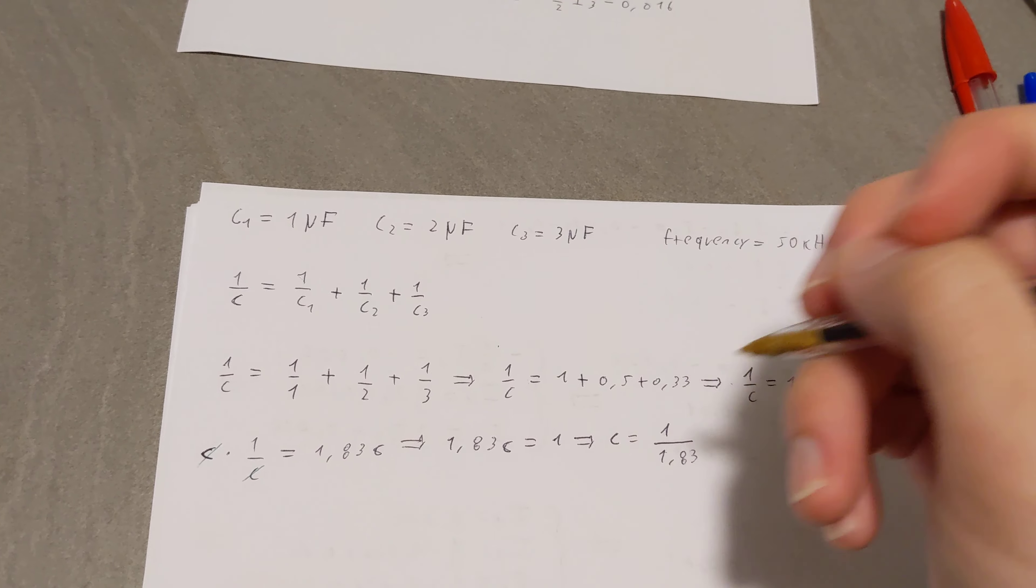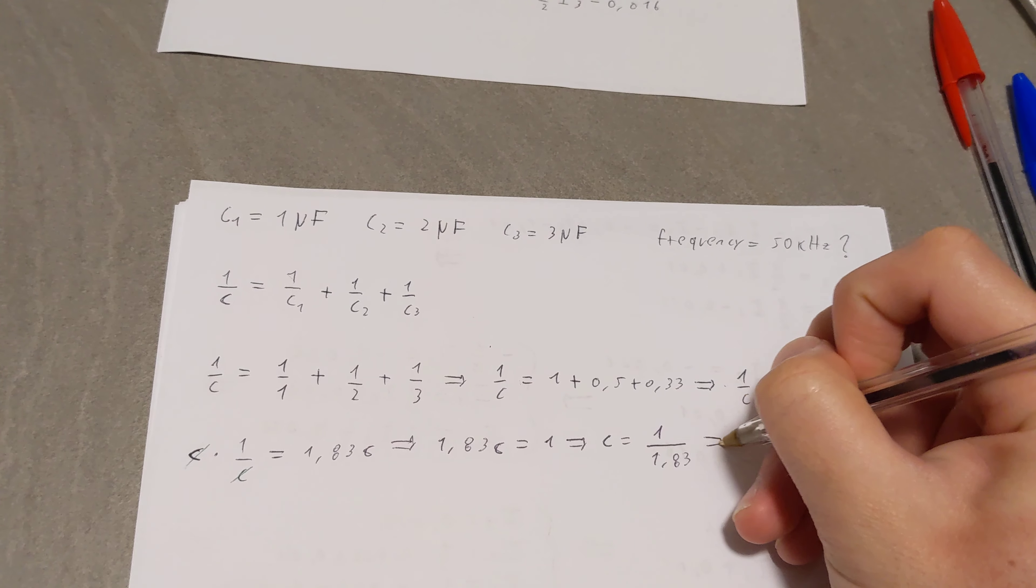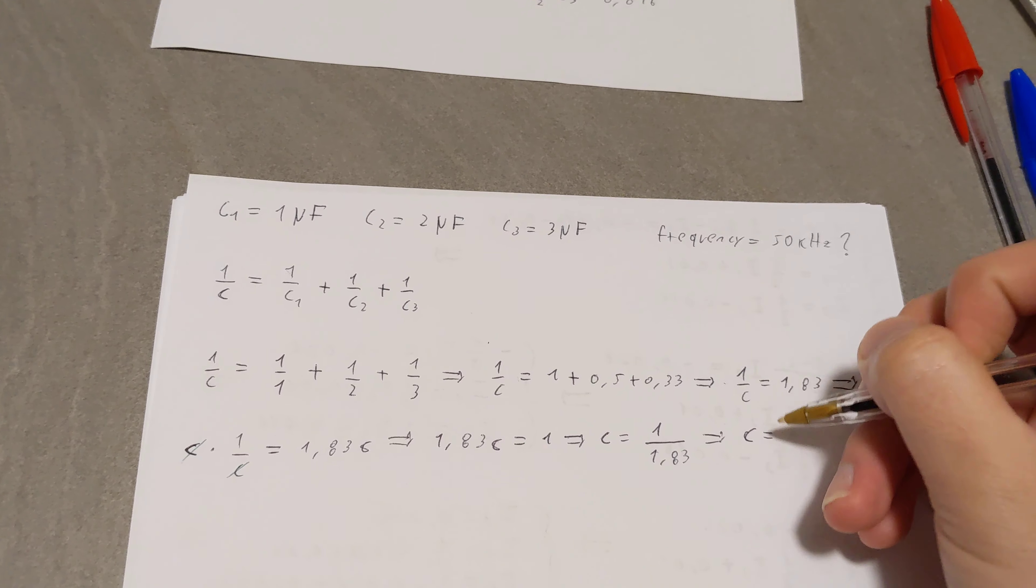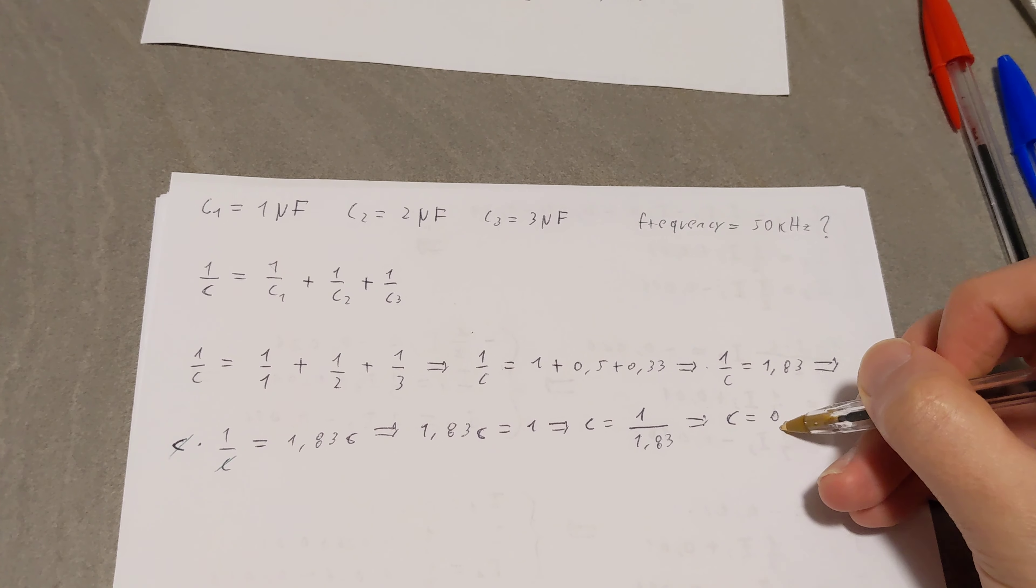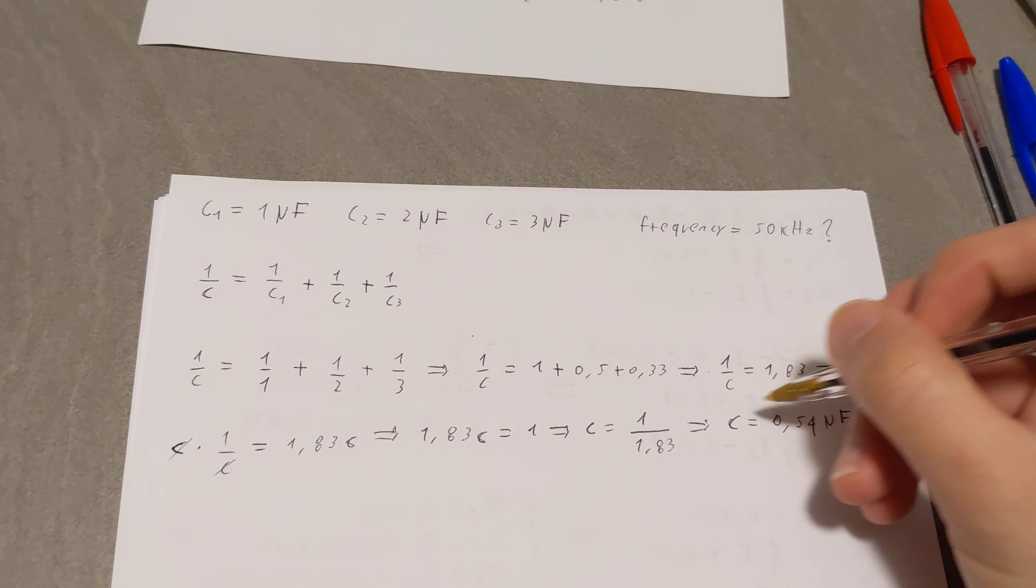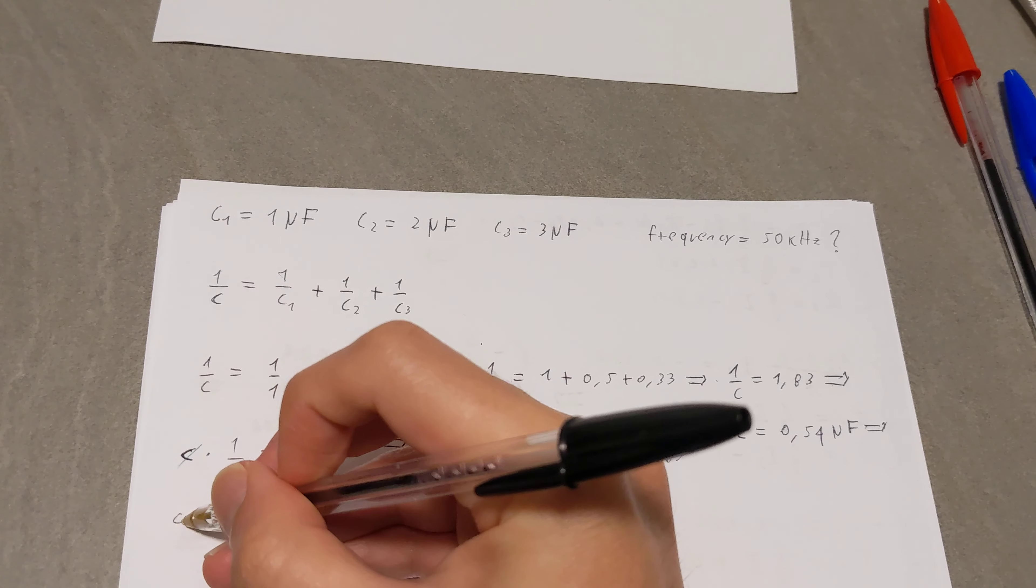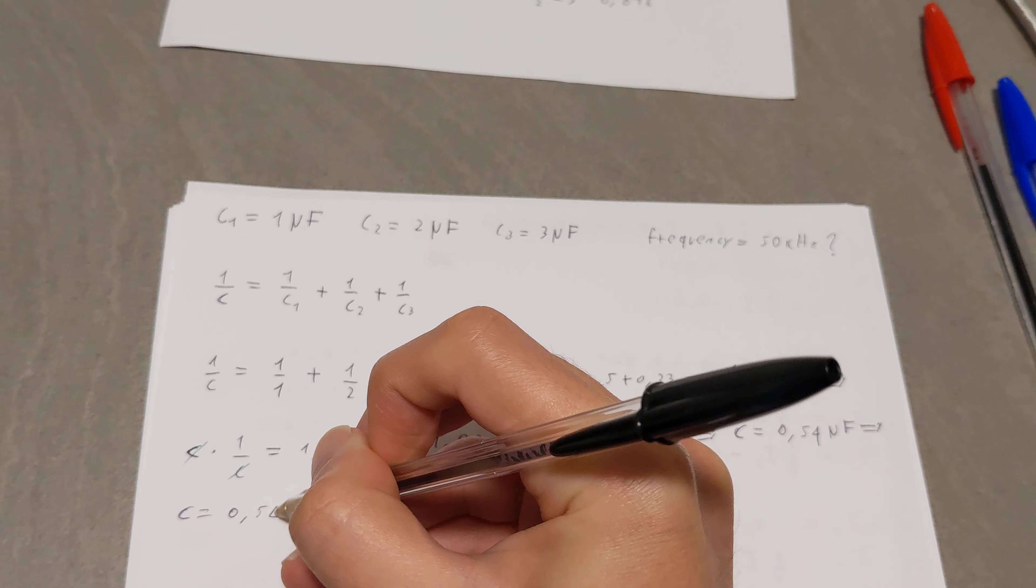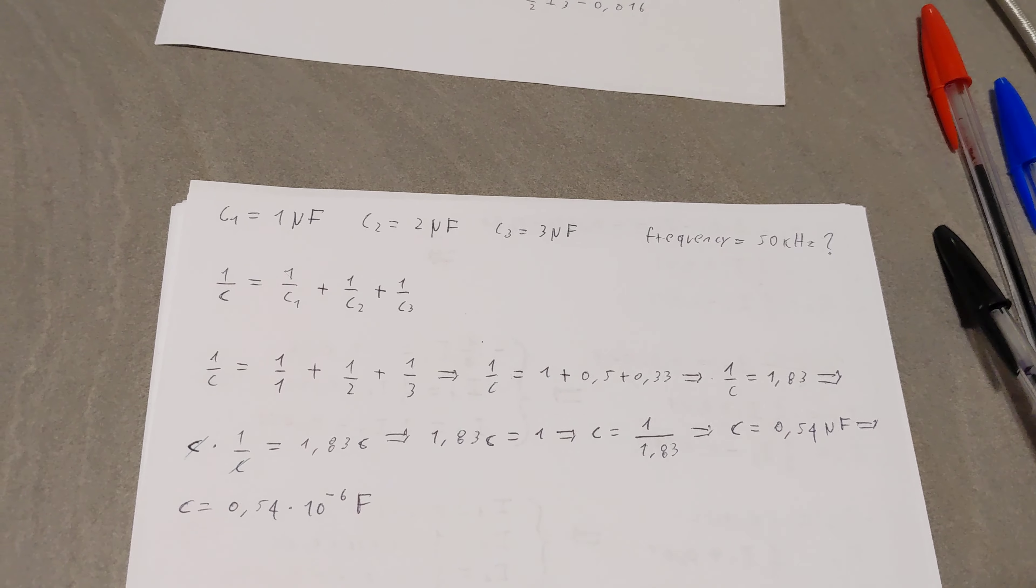And of course, to get this into some context, 1 over 1.83 will be 0.54. And if we want to write it in terms of farad, we would have 0.54 times 10 to the negative 6 farad.